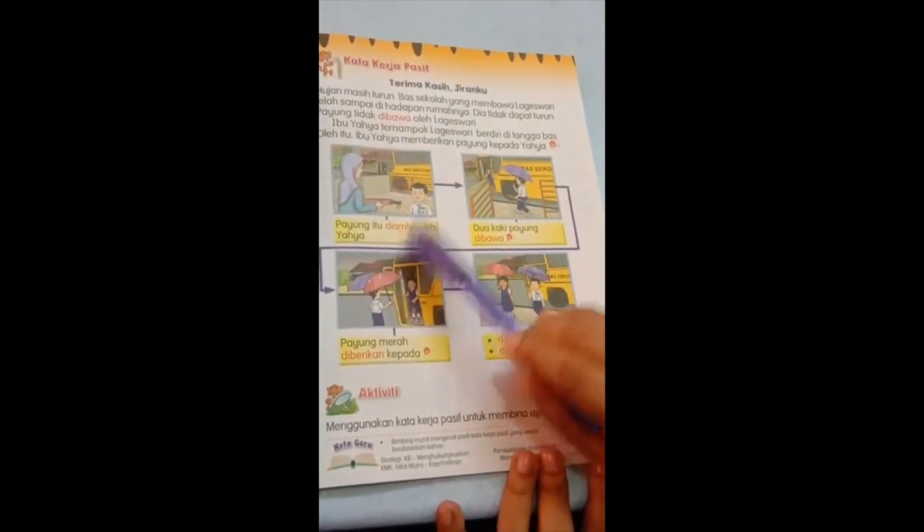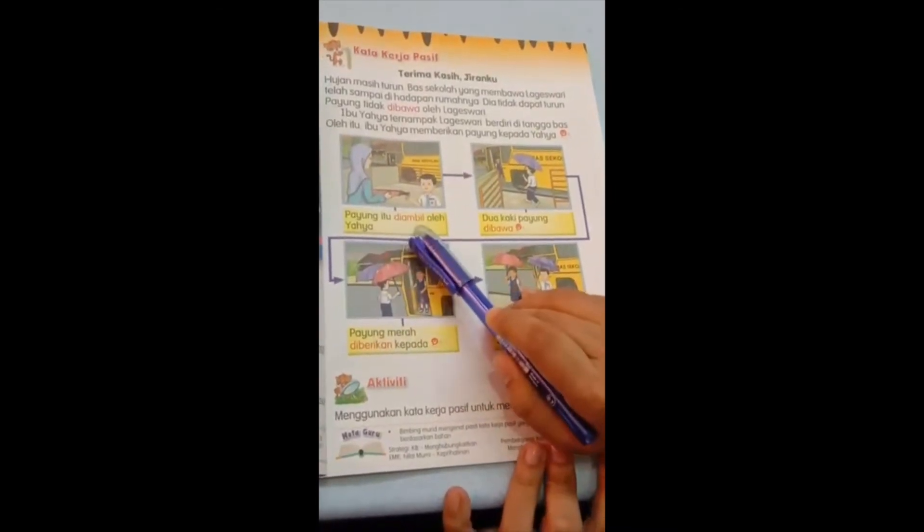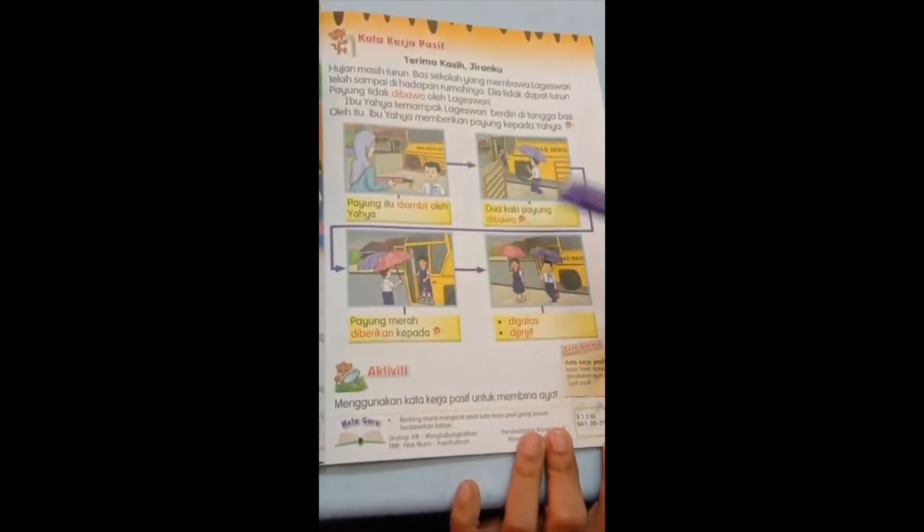Payung itu diambil, taken oleh Yahya. See the word is diambil, not mengambil. Because all this is past tense.